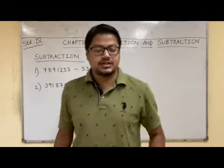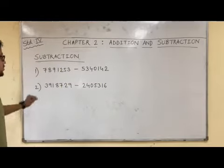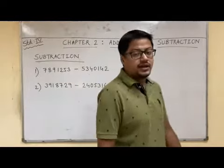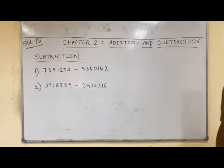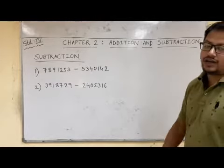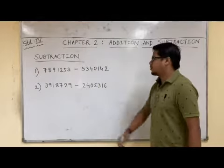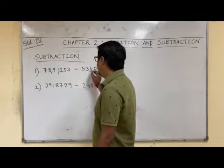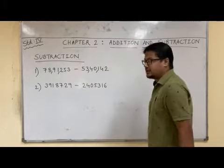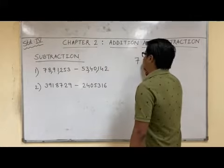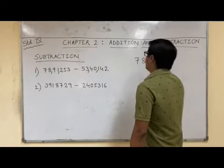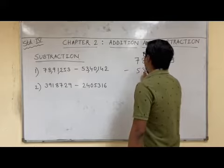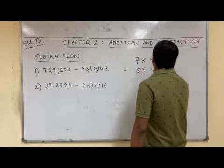If not, we will see certain sums and this subtraction will be very clear. So as you can see, sir has written two questions for subtraction. We will solve both the questions together and we will also revise the method of borrowing and how we are doing the subtraction. So let us start with the first question. I can read 78,091,253 minus 53,40,142. So I will write here 78,091,253 minus 53,40,142.